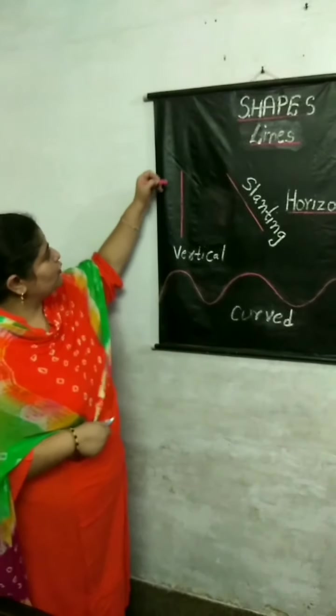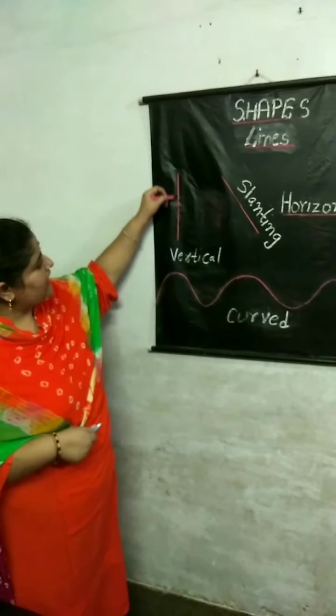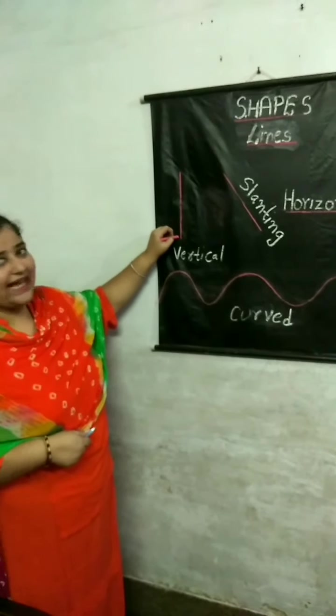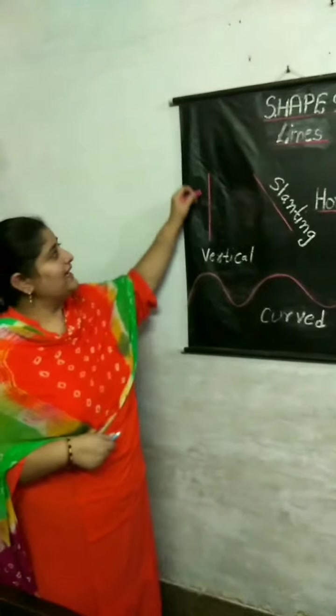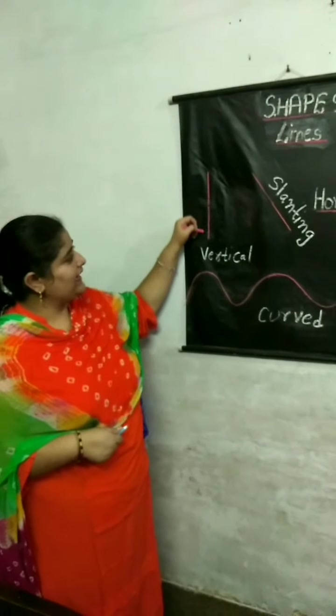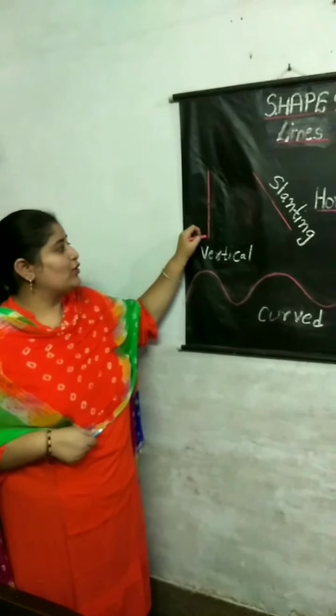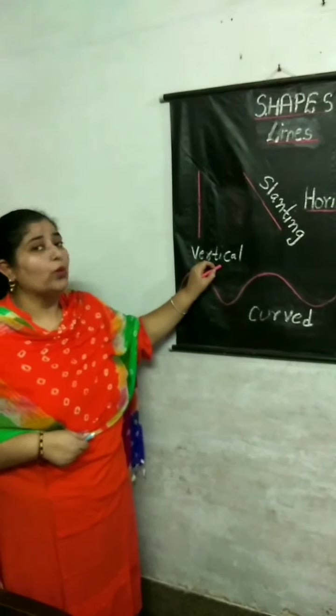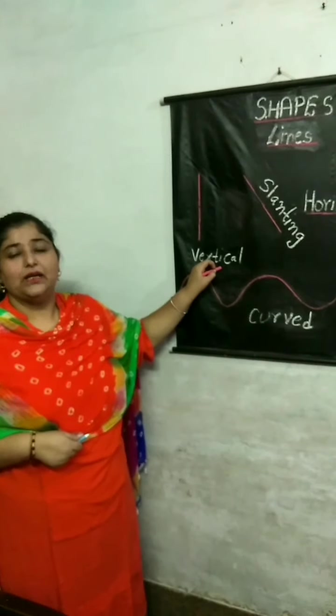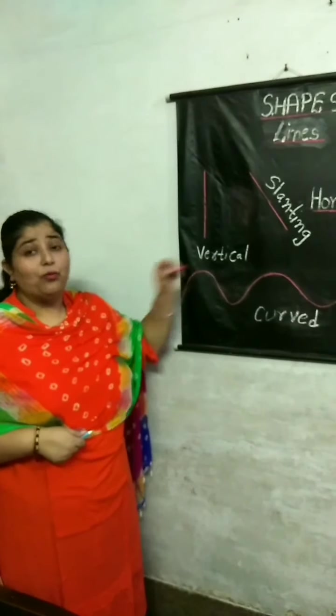Now, my dear students, you could see a standing line. This line is also called a vertical line.